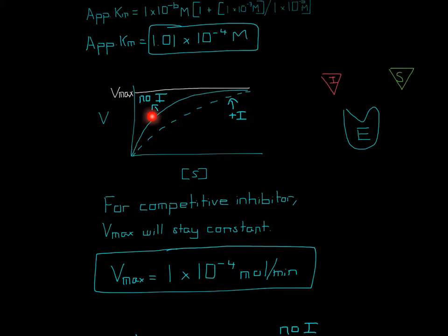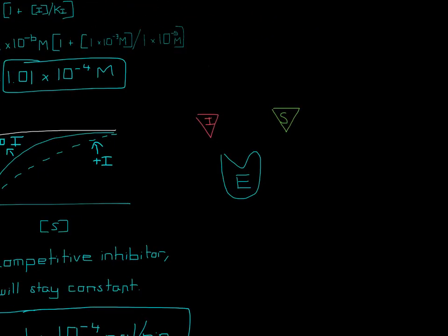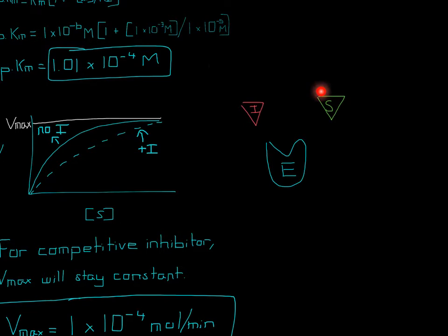For a normal enzyme curve, activity increases and reaches Vmax. When you add a competitive inhibitor, the curve shifts downward — Km increases — however, it still reaches the same Vmax. The enzyme can bind either a substrate or an inhibitor. With a lot of inhibitor present, it takes longer for the inhibitor to dissociate and the substrate to replace it, which is why the affinity decreases and Km increases.